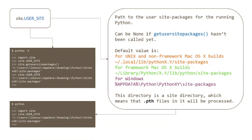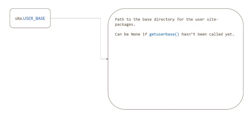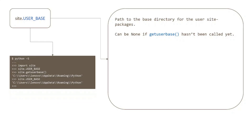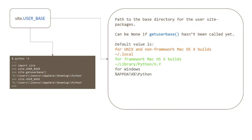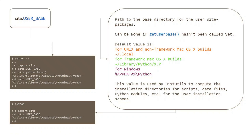The USER_BASE attribute shows the path to the base directory for the user site-packages. It can be None if getuserbase() hasn't been called yet, or if Python was called with the -S option. The default value differs for Unix, Mac, and Windows. This value is used by distutils to compute the installation directories for scripts, data files, Python modules, etc., for the user install scheme. Example shown when Python is called without the -S option.